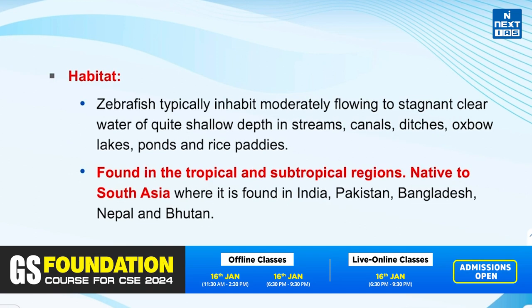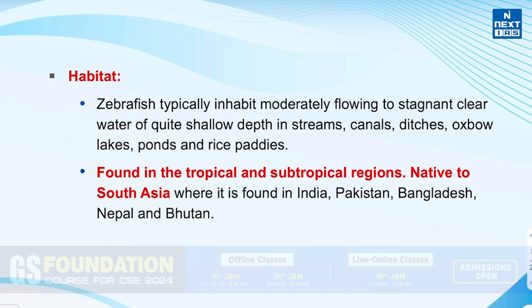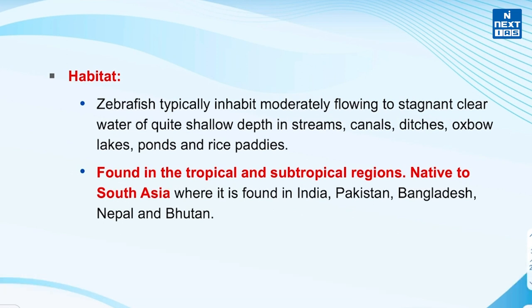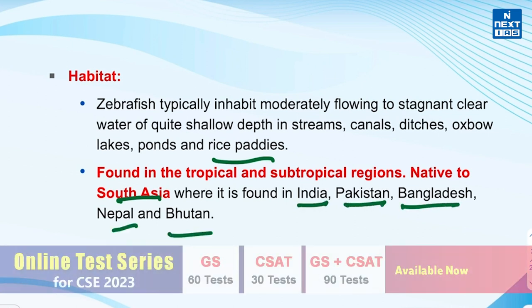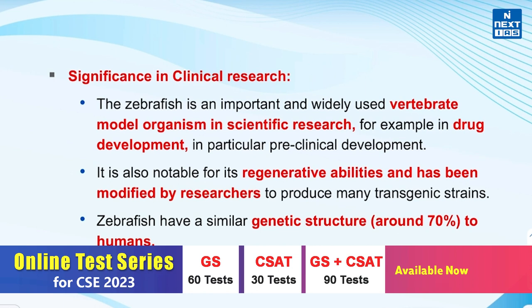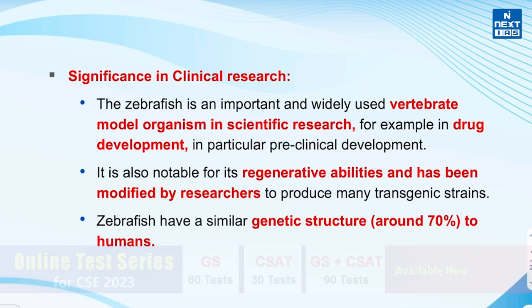Now let's look at the habitat of zebrafish. It typically inhabits moderately flowing to stagnant, clear water of shallow depth in streams, canals, ditches, oxbow lakes, ponds and rice fields. It is found in tropical and subtropical regions and is native to South Asia, where it is found in India, Pakistan, Bangladesh, Nepal and Bhutan.